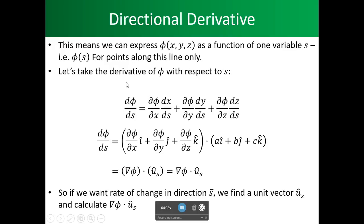Let's take the derivative of phi with respect to s. To do that, we apply the chain rule: d(phi)/ds equals the partial of phi over partial of x times dx/ds, plus the partial of phi over partial of y times dy/ds, plus the partial of phi with respect to z times dz/ds.